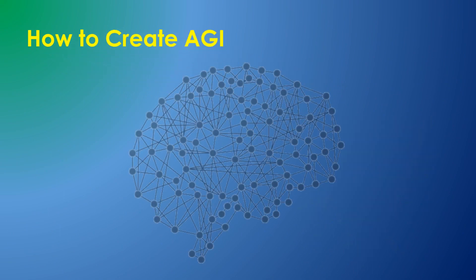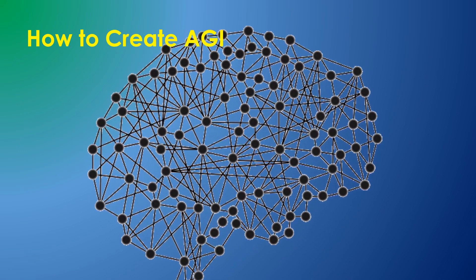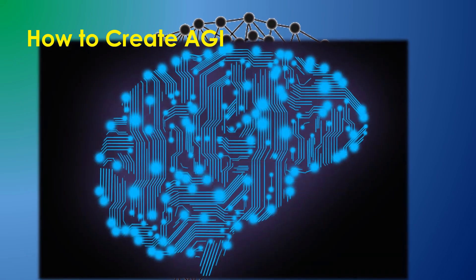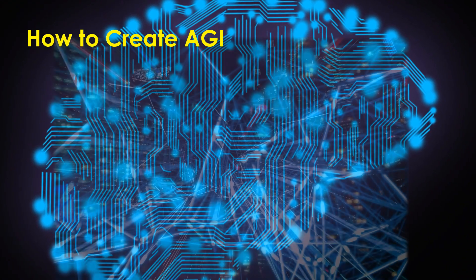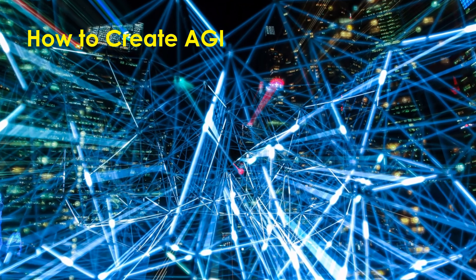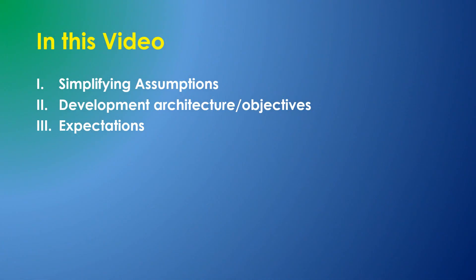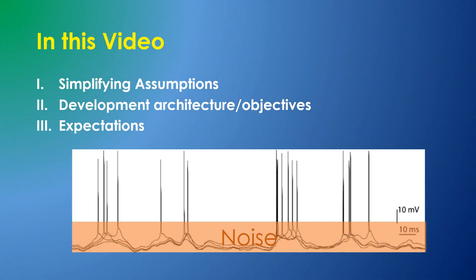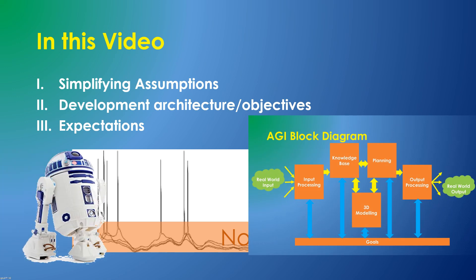How to create AGI. I believe artificial general intelligence is possible, and this video shows how we can make computers which think the way the human brain does. Rather than describing the gamut of competing ideas, I'll describe my own research direction to build an end-to-end AGI system. This video is in three sections: my simplifying assumptions, the necessary components of AGI, and my expectations for the system I am currently working on.